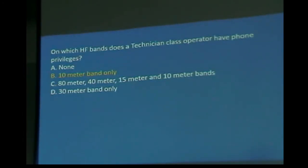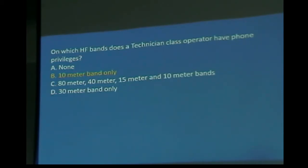There is a move underway to give Technicians some 40-meter and 80-meter frequencies, which can do long distance even at the bottom of the sunspot cycle — primarily to get Technicians capable of helping in long-distance emergency communications, since right now they can't use those frequencies. Currently it would be CW only, but it is possible to send and receive CW using a computer.